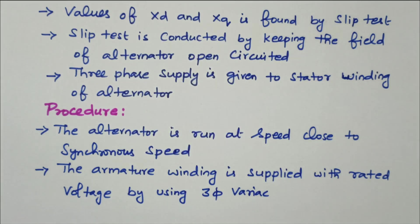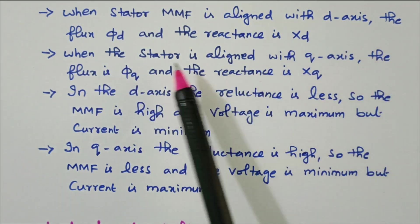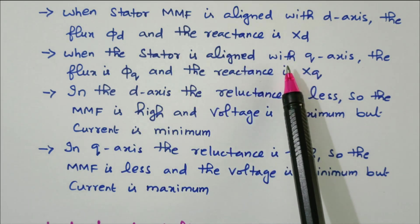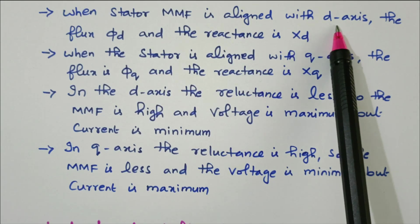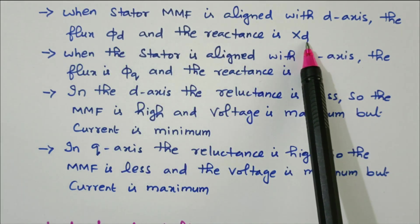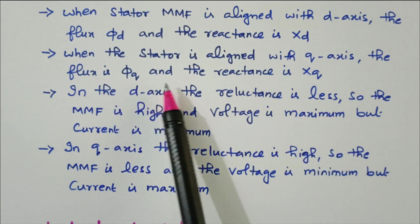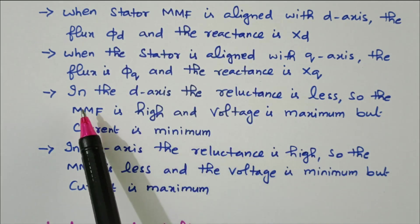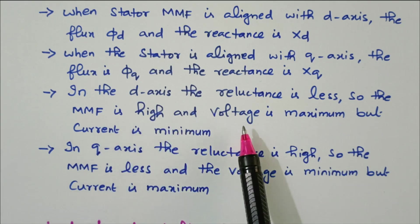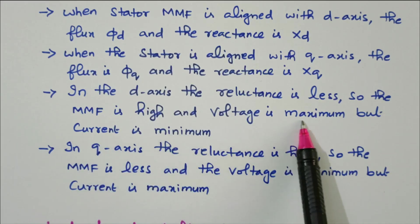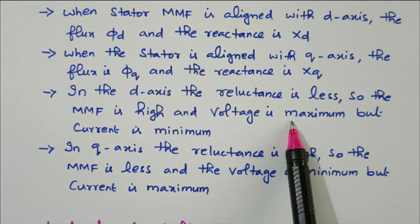When the stator MMF is aligned with the d-axis, the flux is φd and the reactance is Xd. When the stator MMF is aligned with the q-axis, the flux is φq and the reactance is Xq. In the d-axis, the reluctance is less, so the MMF is high and voltage is maximum while current is minimum.